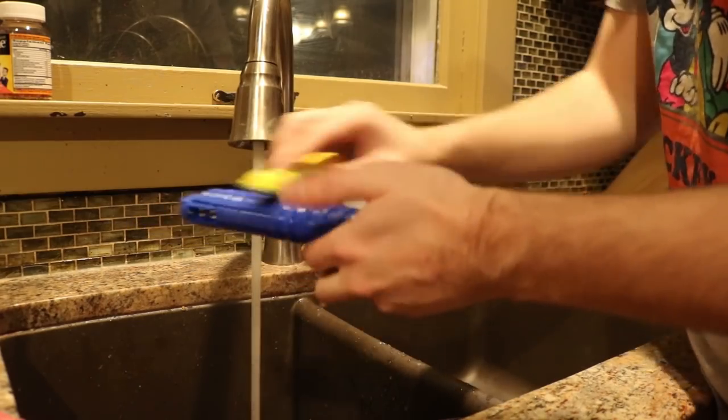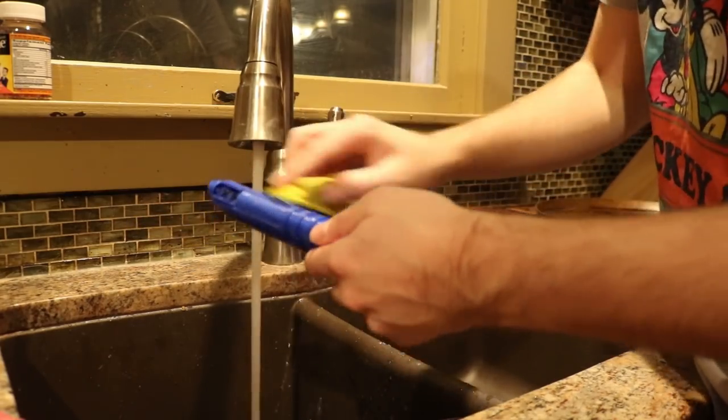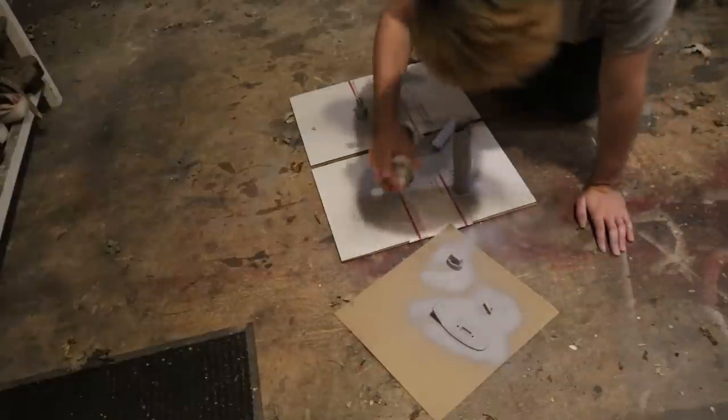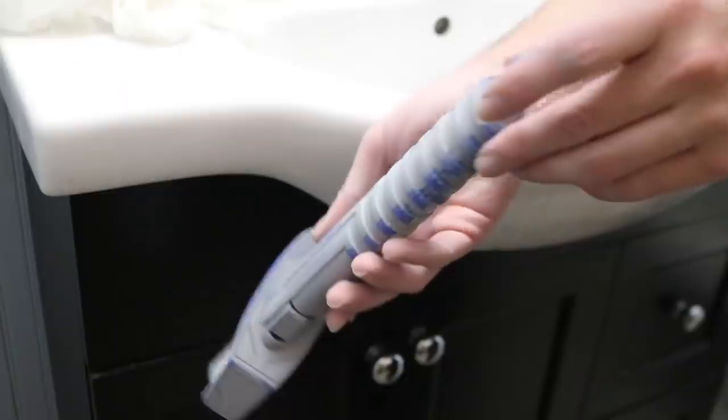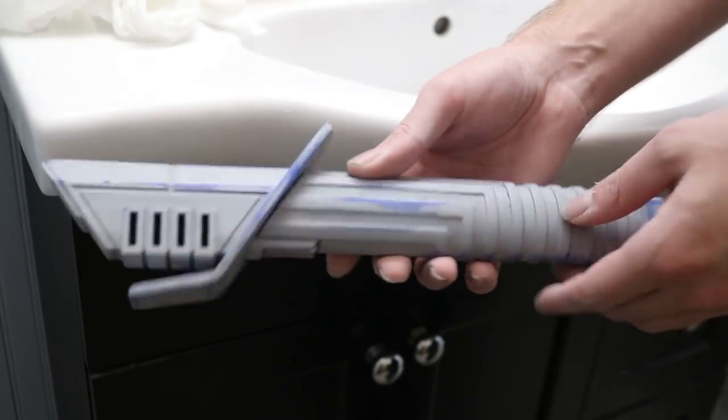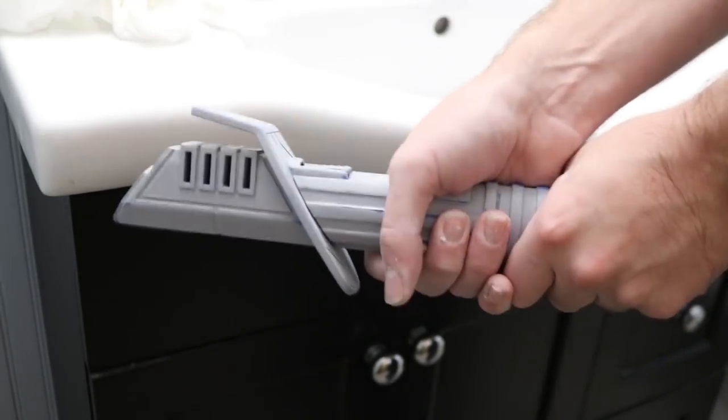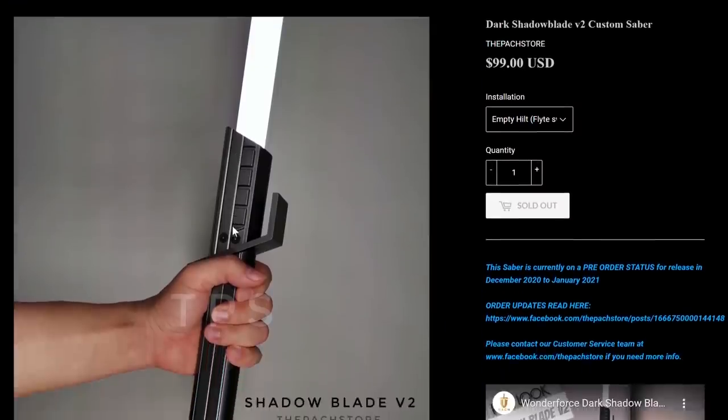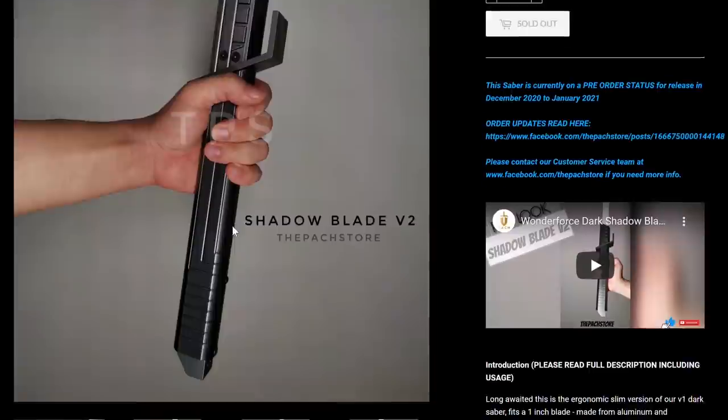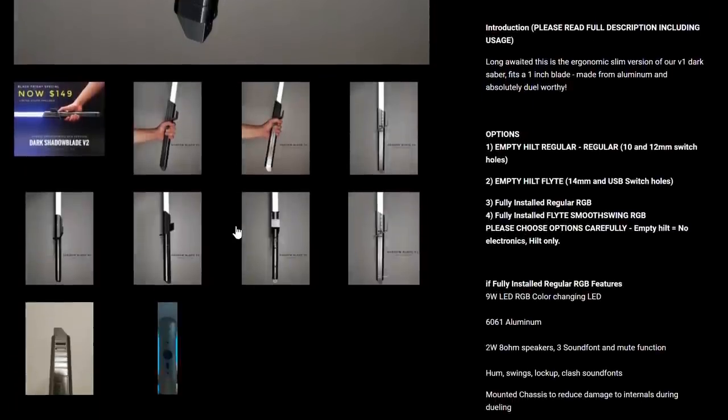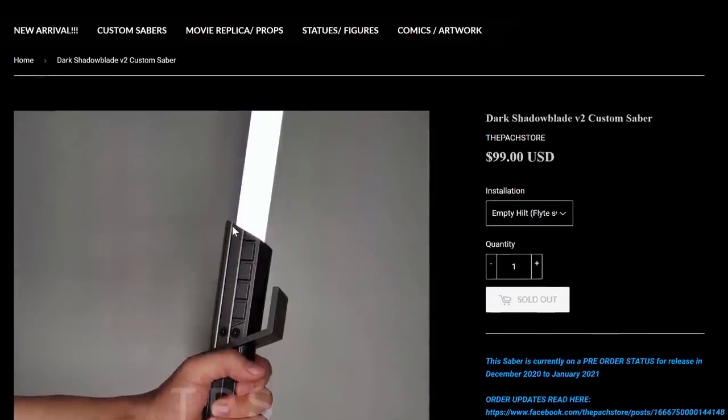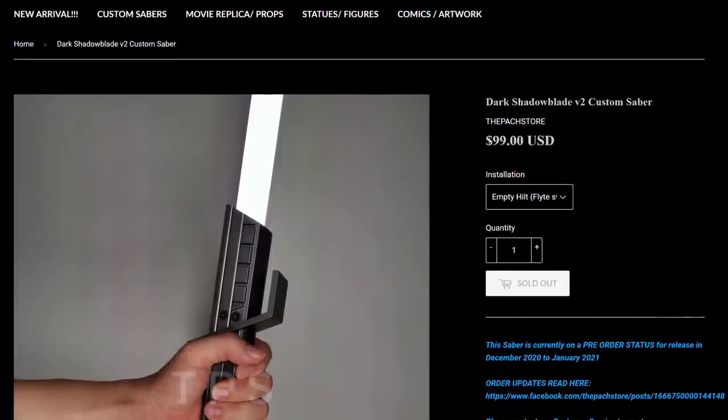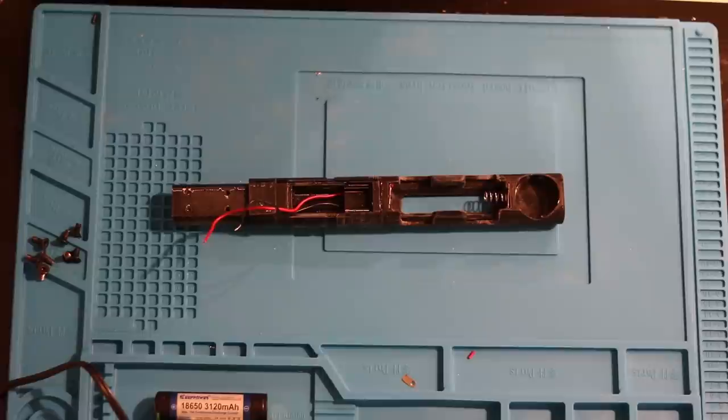I sanded everything down with 80 all the way up to 400 grit sandpaper, and then I kind of just went at the whole thing with a whole bunch of filler primer because filler primer is a 3D printer's best friend. And then I continued to sand down the high spots and get everything to look nice and smooth. I actually opted to go with a metal hilt from the patch store. It is actually currently sold out because of their Black Friday sale, but I was able to get one mainly because it also holds a one inch blade, which I'm going to talk about a little bit later.